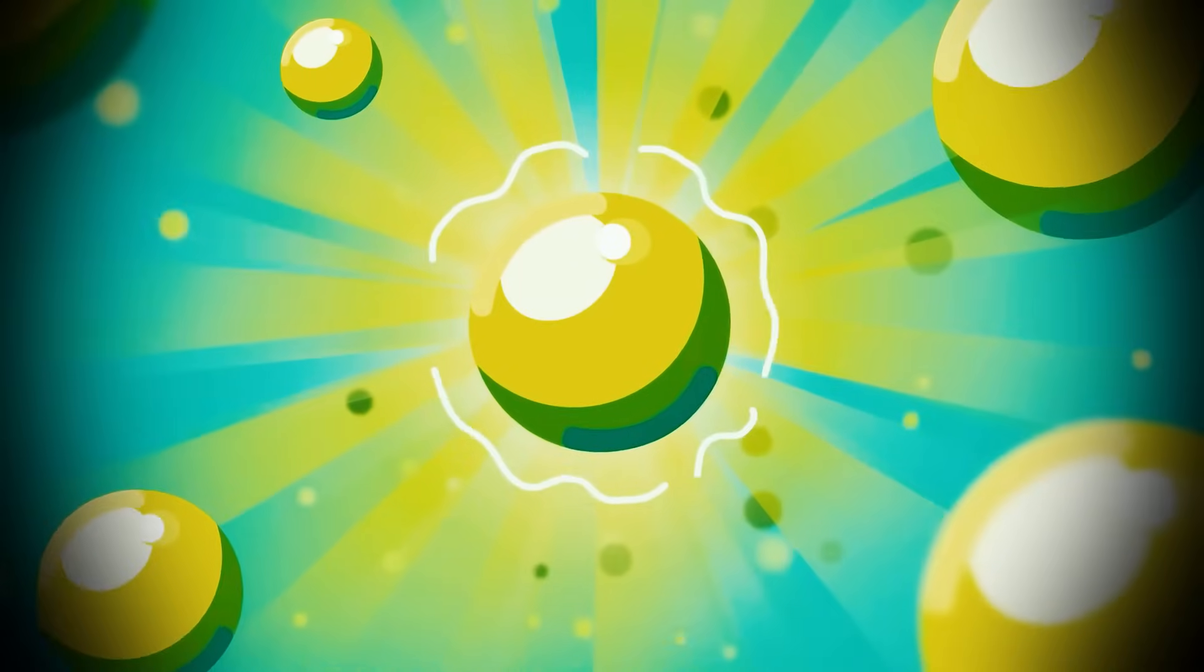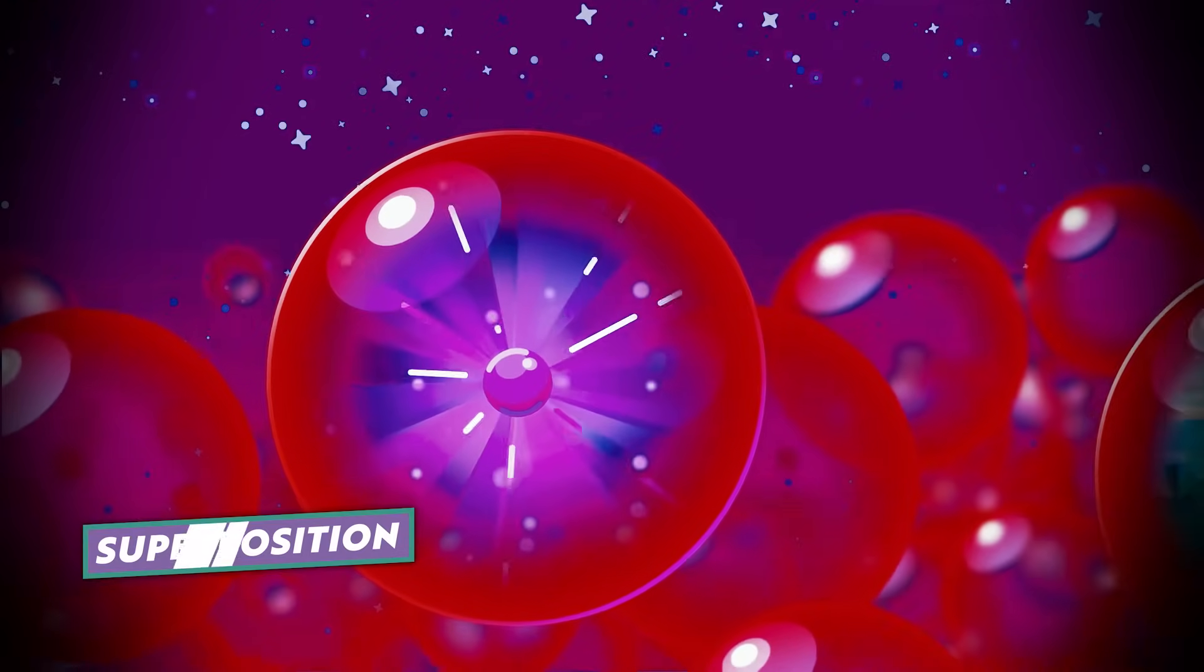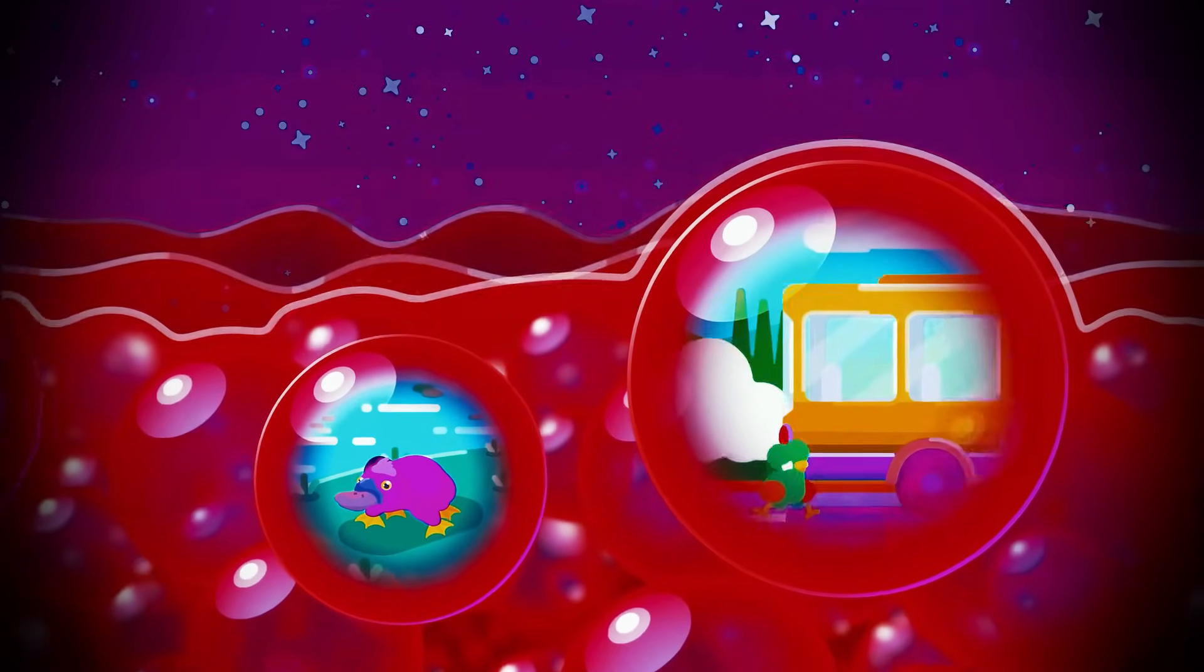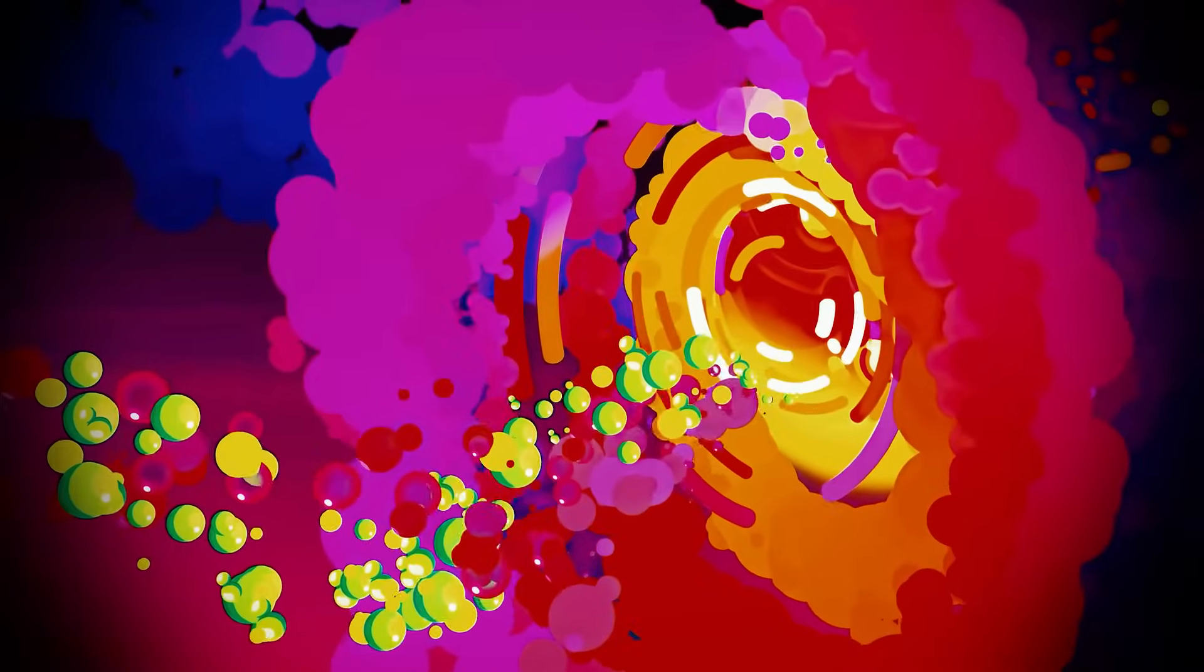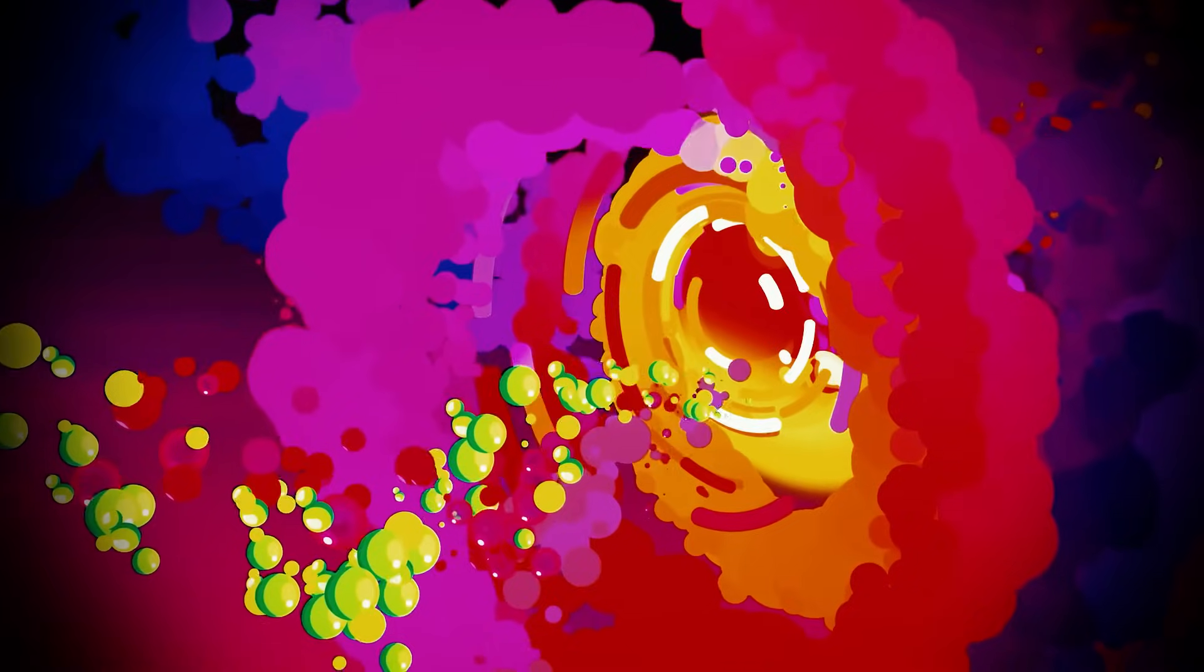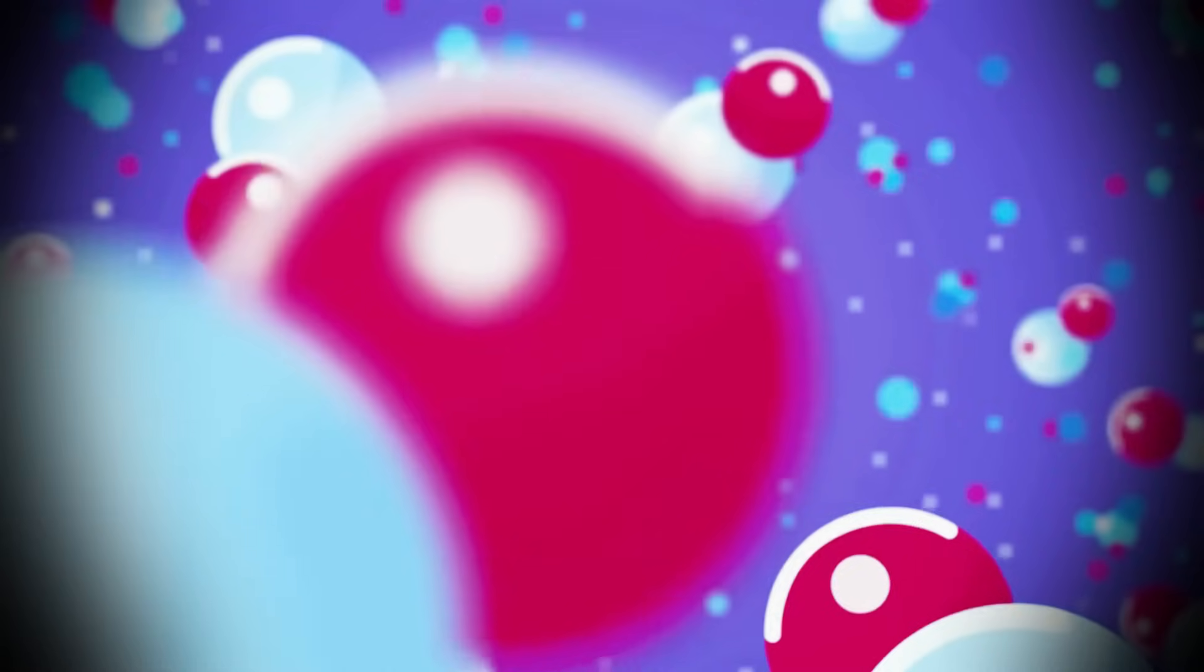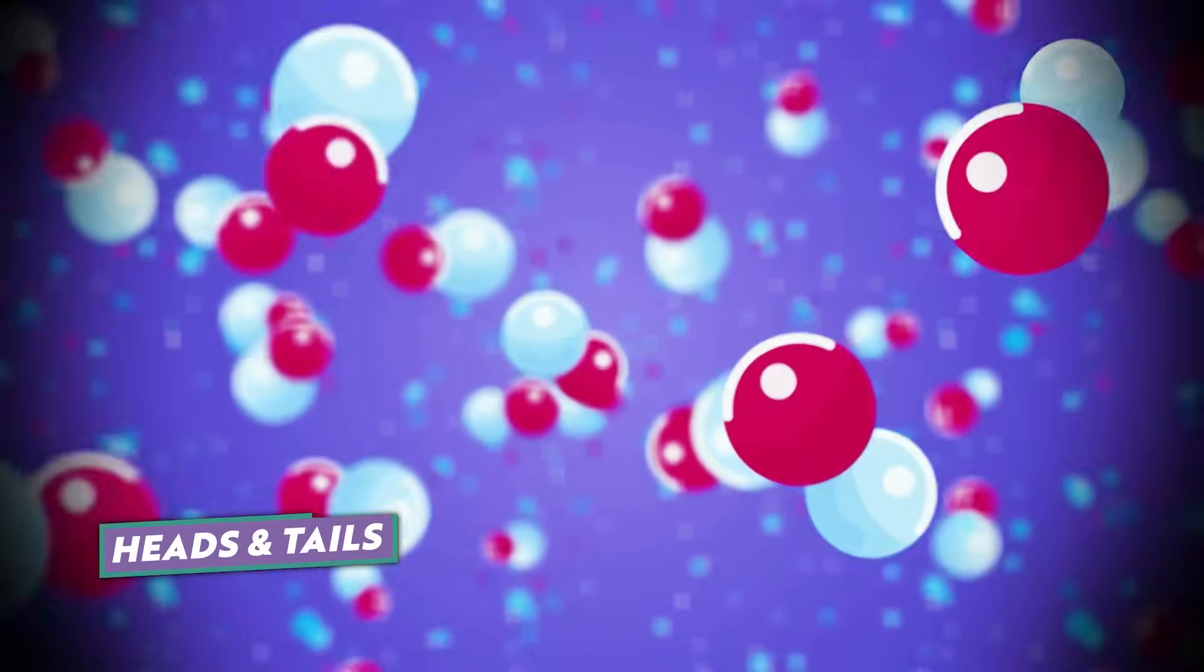It's like having your cake and eating it too. This concept, called superposition, makes us question what's really happening before we look. It challenges our everyday understanding of how things work. Instead of particles neatly picking one state, they can juggle between multiple possibilities all at once. It's a bit like spinning a coin. Before it lands, it's in this in-between state, both heads and tails at the same time.